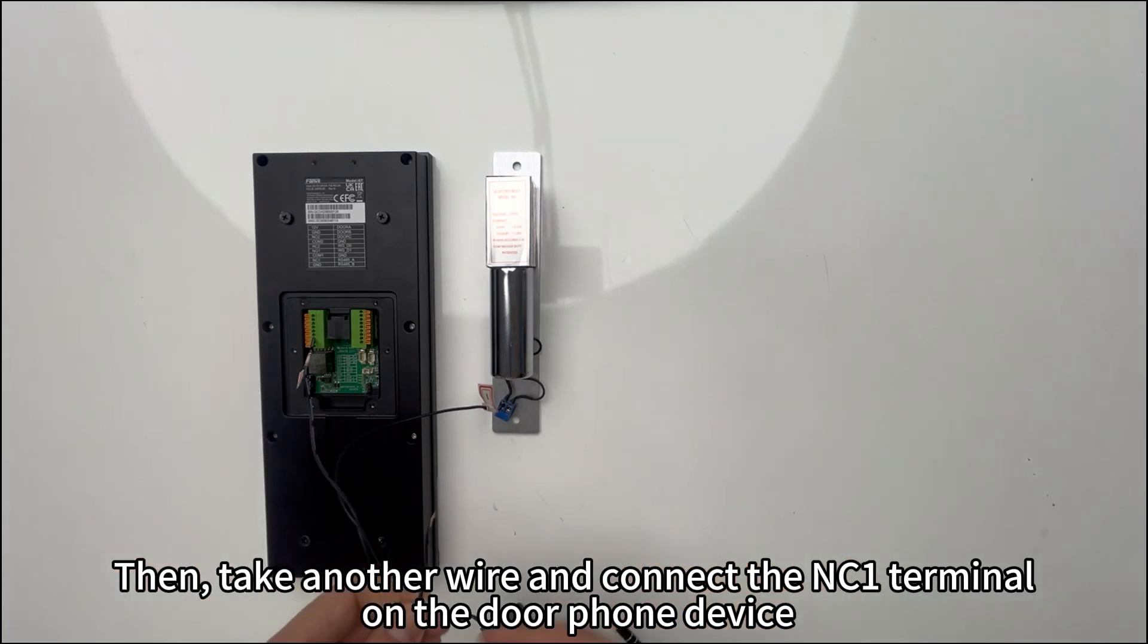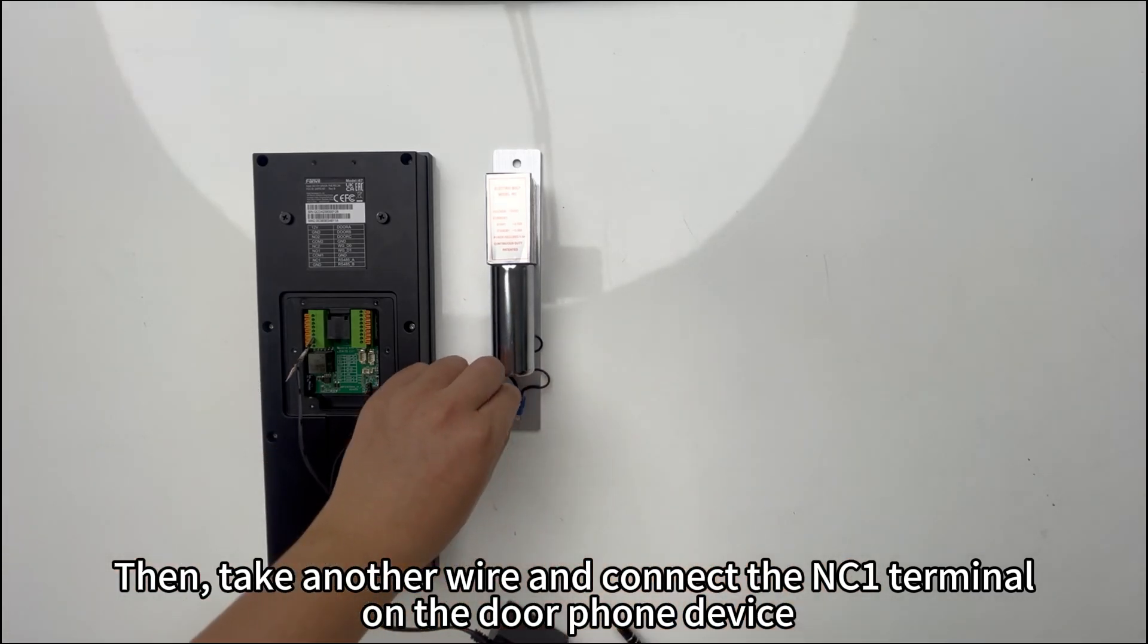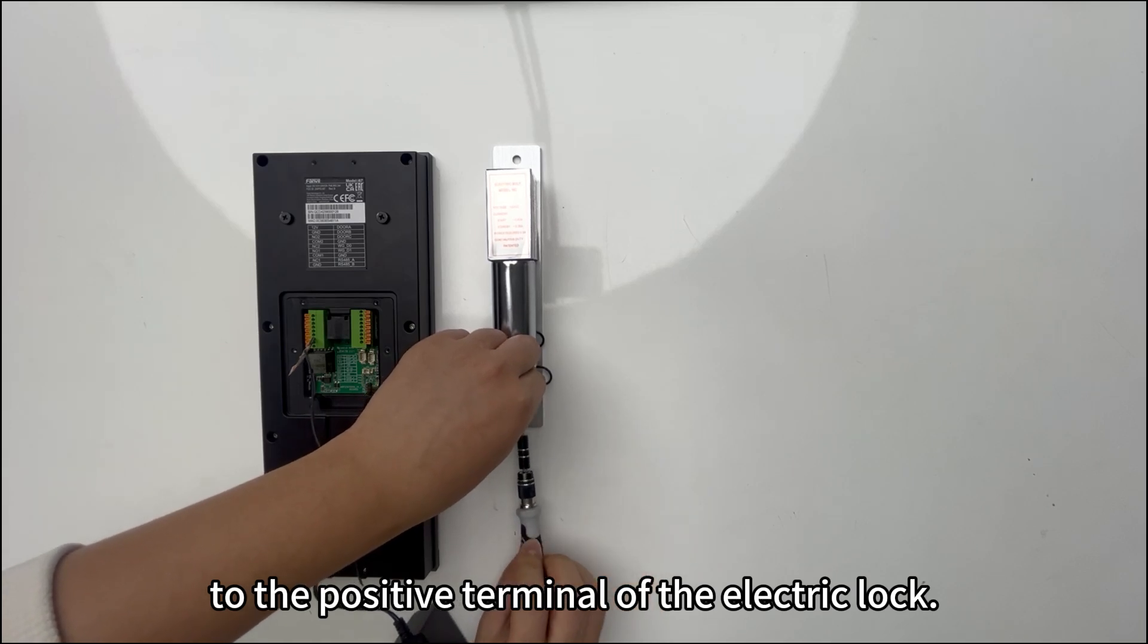Then, take another wire and connect the NC1 terminal on the door phone device to the positive terminal at the electric lock.